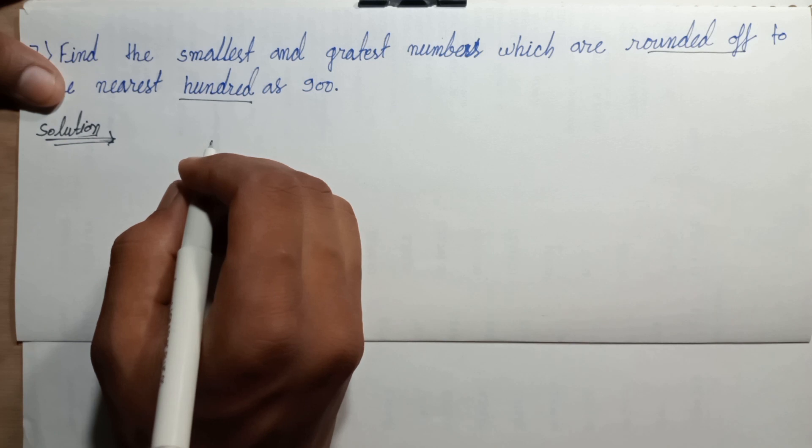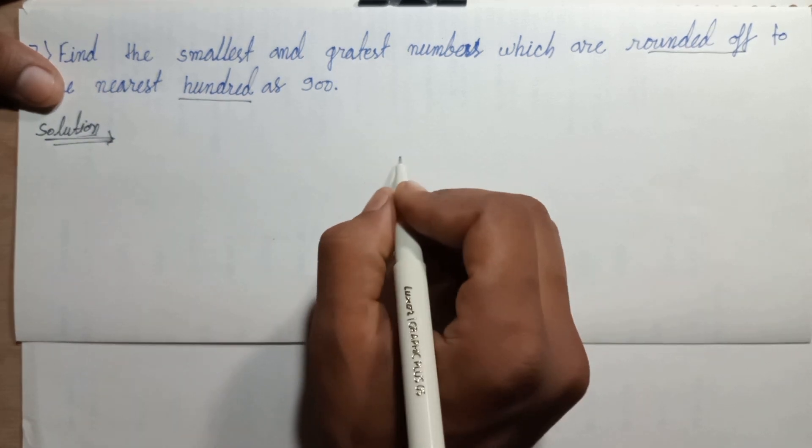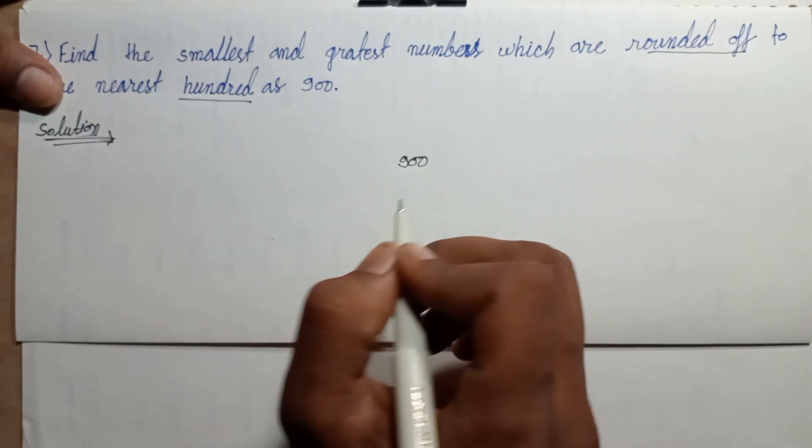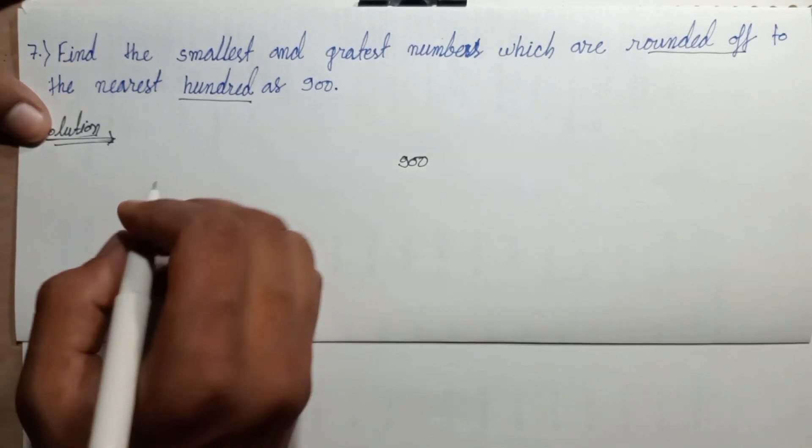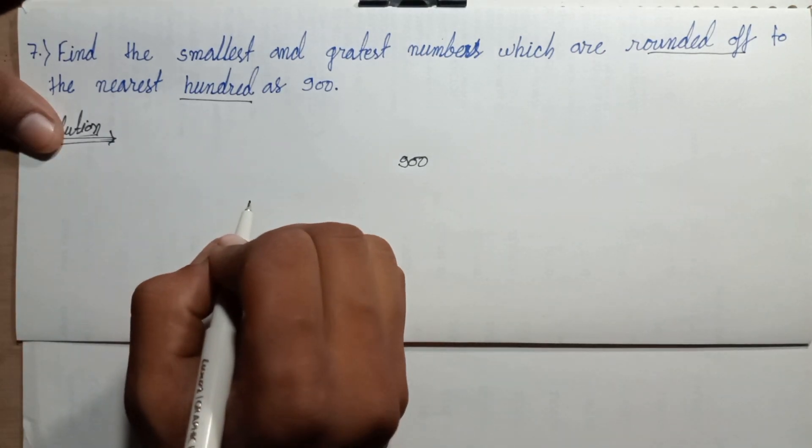Fifty upward, fifty downward. Nine hundred is a midpoint. Fifty downward.